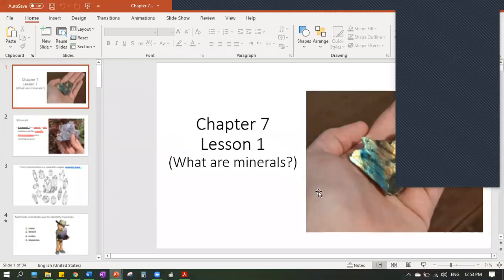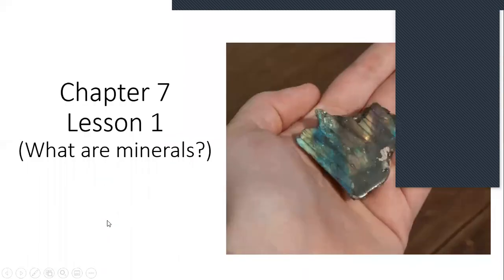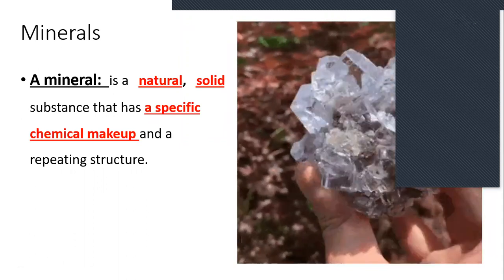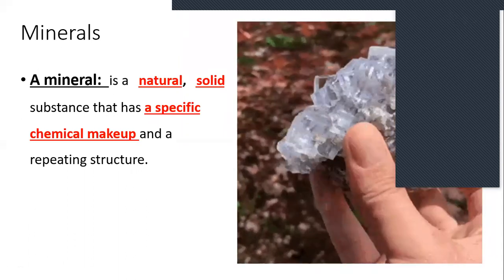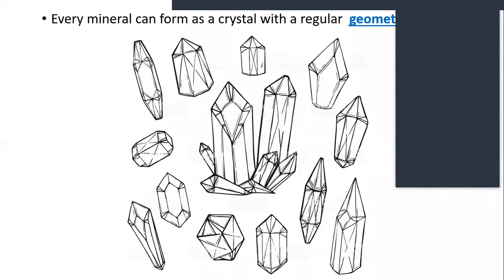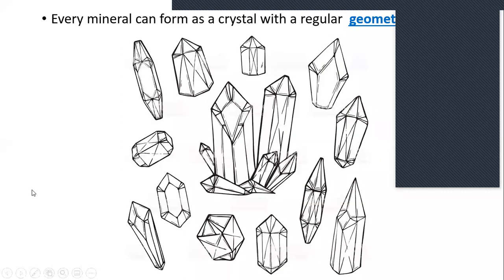So here you can see just a quick reminder of Lesson 1. We talked about minerals and we said that minerals are natural things — they are not man-made. They are solid all the time and they have a specific chemical structure, and they have this special shape which we call geometric shape. That's the name of the crystal shape of minerals — it's called geometric shape.